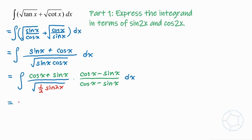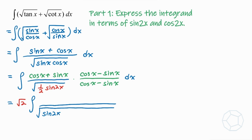In the denominator, the square root of one-half is taken out as square root of 2, a constant outside the integral. Then we have the square root of sine 2x. For the term cosine x minus sine x in the denominator, we put it inside the square root — so we have a square and square root, with cosine x minus sine x inside the bracket. In the numerator, we have the form (a plus b)(a minus b), the difference of two squares, a squared minus b squared.